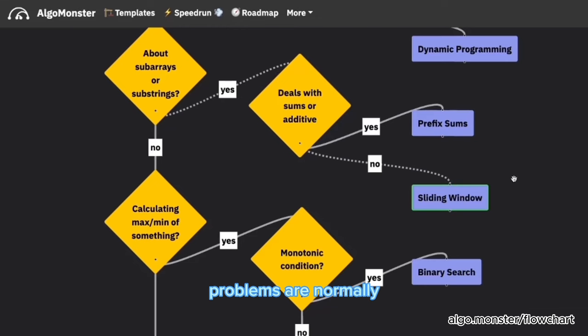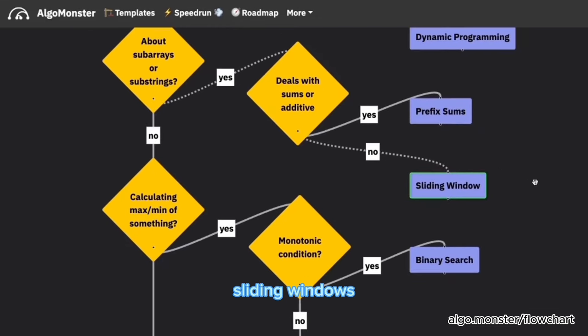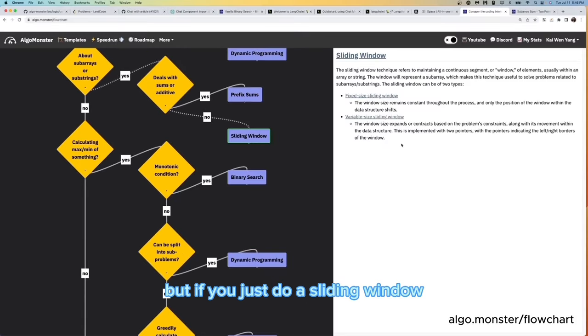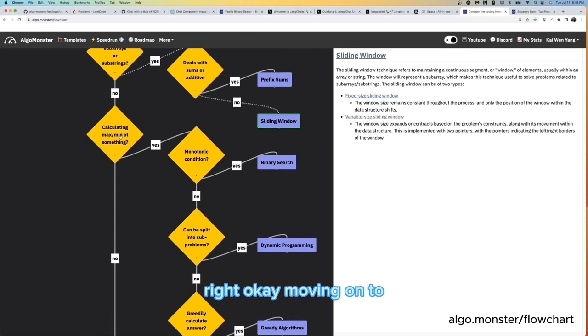However, if it deals with sums, applying prefix sums could make it a lot easier. Right. So the sub array problems are normally sliding windows, but if you just do a sliding window, sometimes the time limit will still exceed because you are doing repeated computations on sums. This is where prefix sum comes in handy.